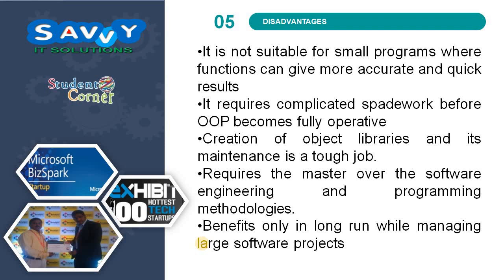The disadvantages of Object Oriented Programming are: it is not suitable for small programs where functions can give more accurate and quick results. It requires complicated groundwork before an object oriented program becomes fully operative. Creation of object libraries and their maintenance is a tough job. It requires mastery over software engineering and programming methodologies. Its benefits are realized only in the long run while maintaining large software projects — it is suited for large software, not for small ones.